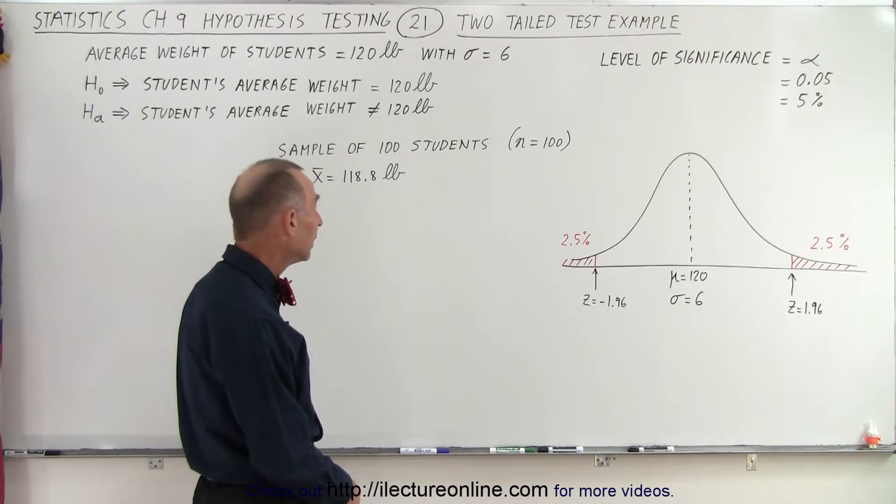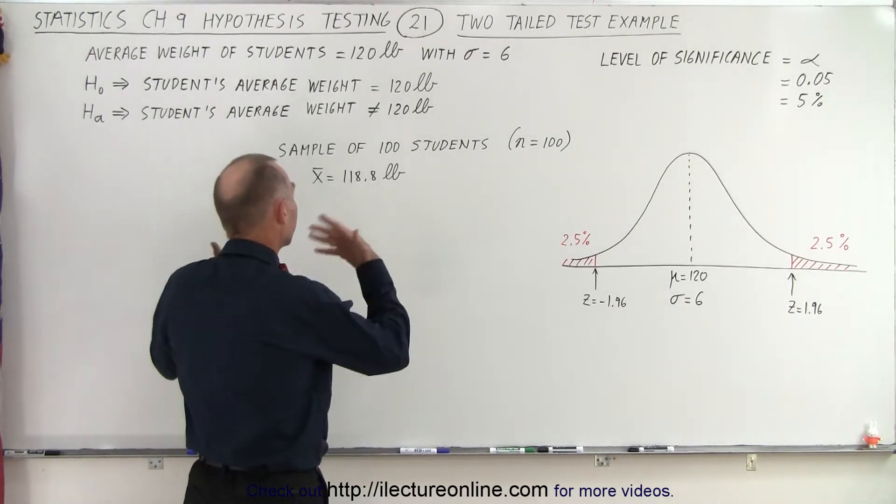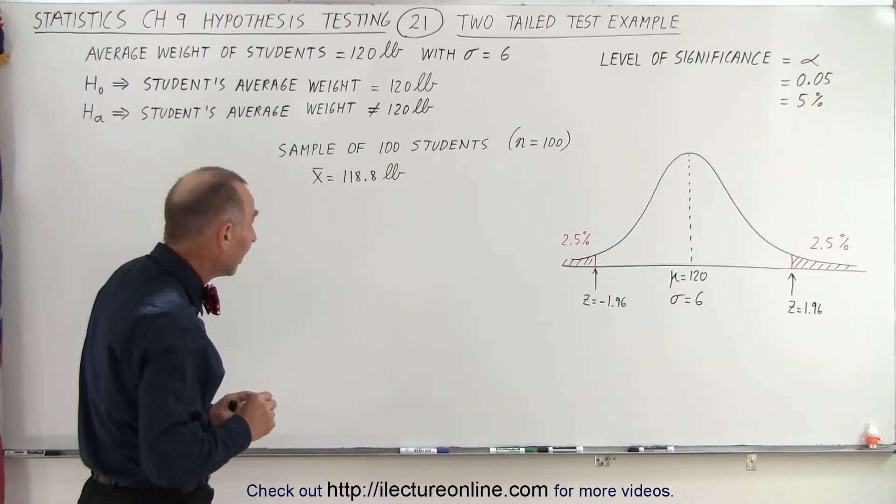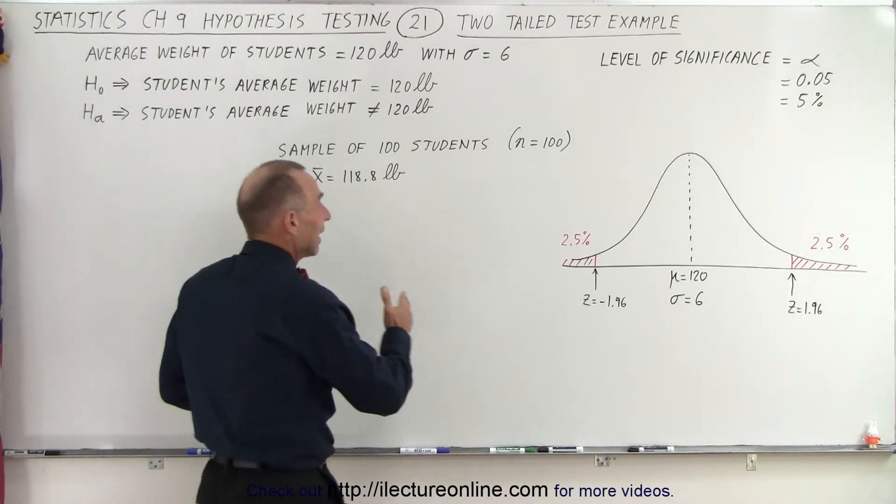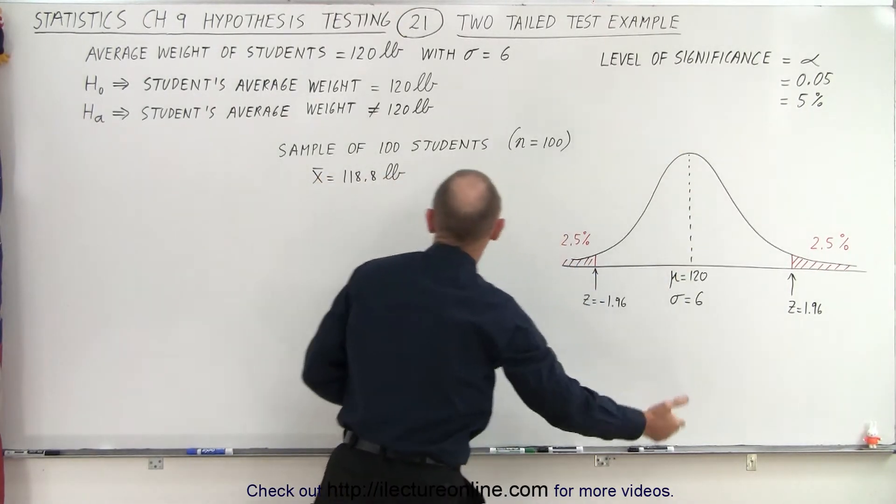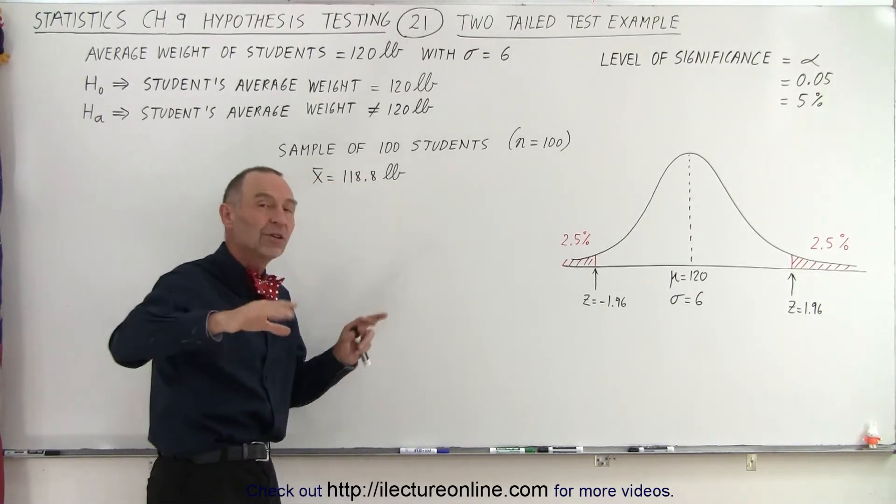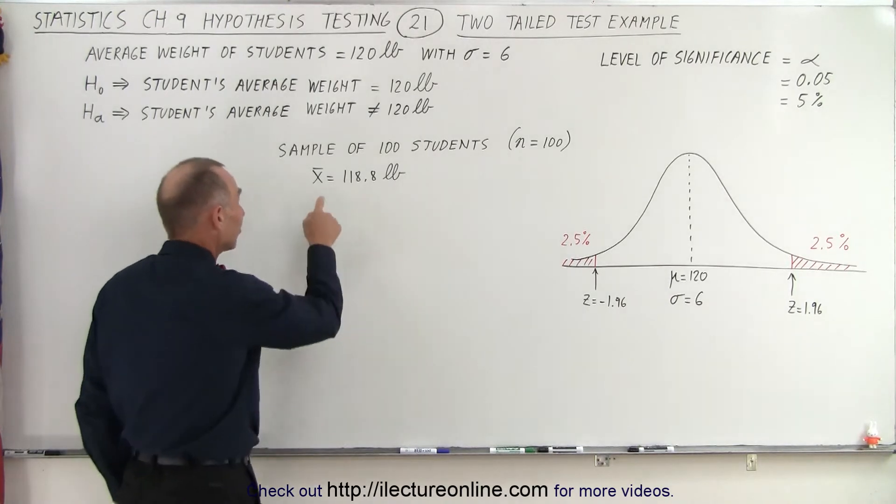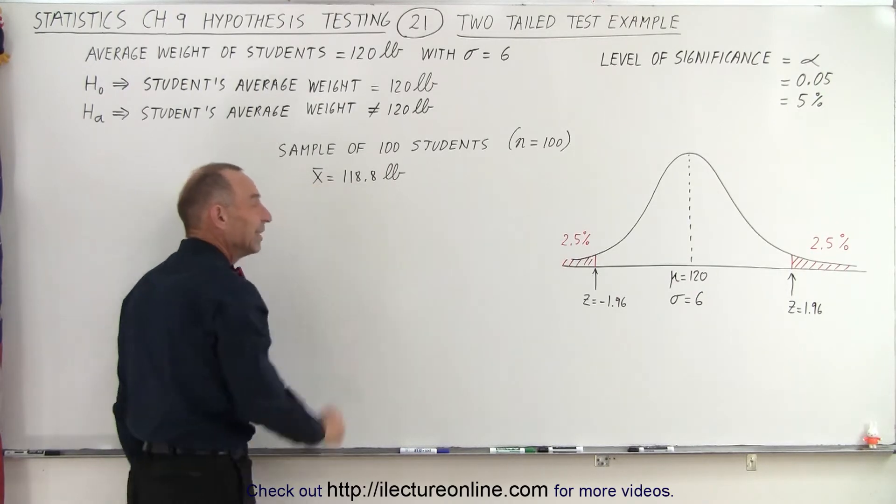So what we're going to do now is we're going to take a sample of students, and let's say we picked a sample of 100 students. Now 100 students is a big sample, and so it doesn't take much of a difference between the mean of the population and the mean of the sample to indicate that we're in the critical region, therefore we're going to reject the null hypotheses. So here we end up with a sample size of 100, and with a mean, an average of the sample of 118.8.